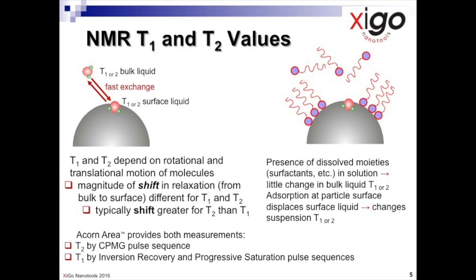Liquid molecules rapidly switch between the surface and bulk domains. This is called fast exchange, and this is faster than the time scale of a single NMR experiment.